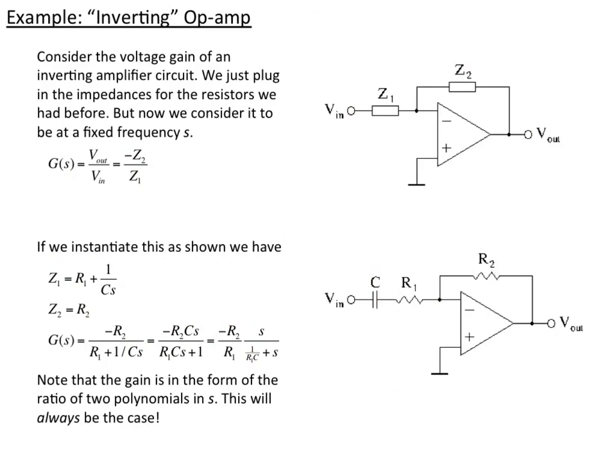My gain is in the form of a ratio of two polynomials. In the numerator, I just have s as the polynomial. In the denominator, I have a constant plus s. We'll always be able to analyze the gain or the trans-impedance of the transfer function in general as a ratio of two polynomials in s.